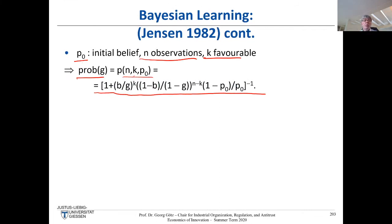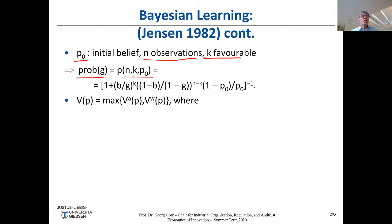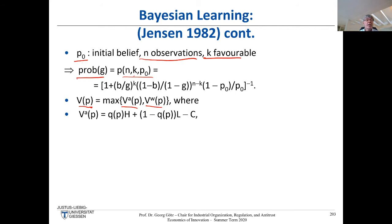Given we know how updating works, we can solve our optimal adoption problem. We write down the value of the new technology as a function of the updated belief — the firm value V(p) — which is the maximum of VA (adopting) and VW (waiting). What does it mean to adopt right now? I estimate the probability of getting a high profit, and with the converse probability I get a low profit, minus adoption cost C.